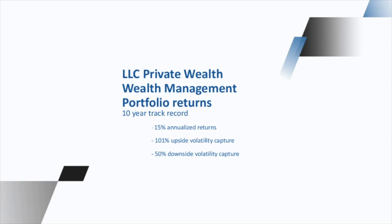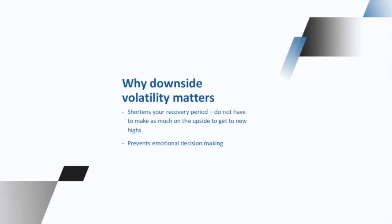Obviously, if you can skip out on the downside volatility, it shortens your recovery period. You don't have to make as much money on the upside to get back to even. If you're down 10%, you have to make more than 10% to get back to square. It also prevents emotional decision making at the bottom of the market.